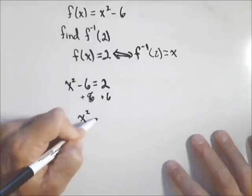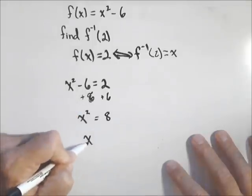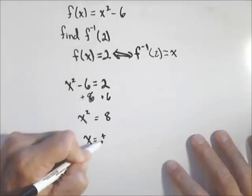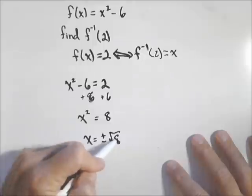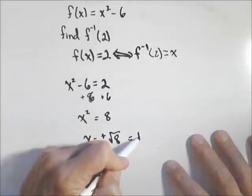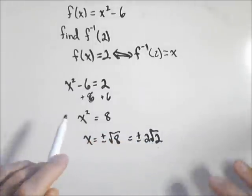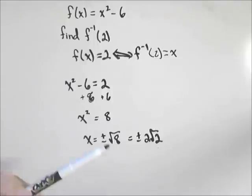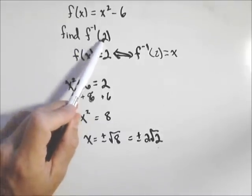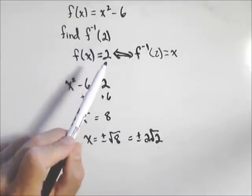There I get that x equals positive and negative square root of eight, or if we wanted to simplify that, positive and negative two root two. So when you're asked to find f inverse of some input, remember that's an output to your original function.